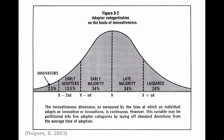If we look at this bell curve, Sniff is representative of innovators and early adopters; Scurry is early majority; Haw is late majority; and Him represents laggards. This is based on how innovative they are. My question to you is: who do you want on your team? If you want only the innovators and early adopters, that's probably going to create a problem because you won't have the understanding and opinions of the other groups. Putting some of those other people on your team helps you get a sense of what they're about and what their objections are.